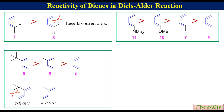Among these four compounds, compound 11 has the highest reactivity, after that compound 10, and then compound 7. This is because the N,N-dimethyl group has higher electron-donating tendency than methoxy, which in turn has higher electron-donating tendency than the methyl group.